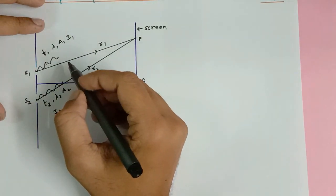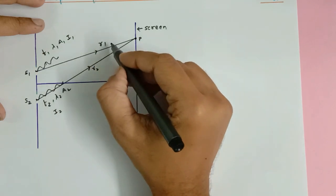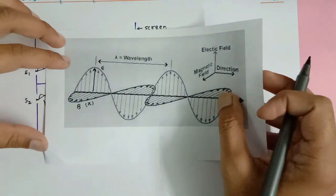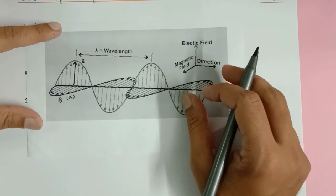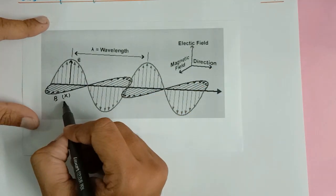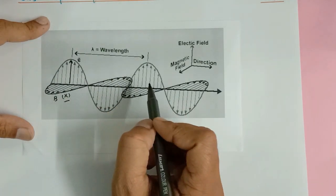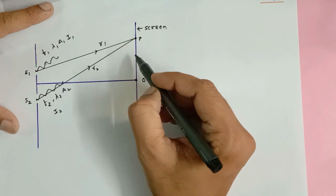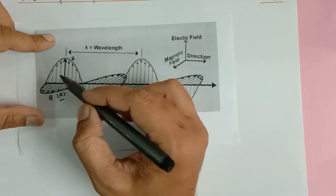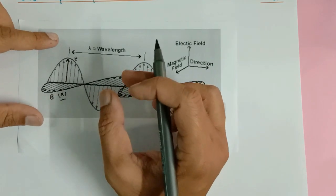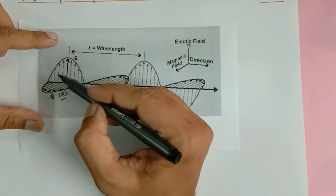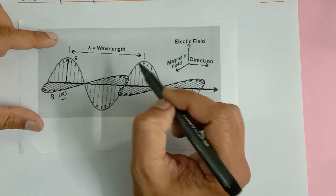Now we might like to understand what is light and what causes the interference pattern. Light is basically an electromagnetic wave — there is an electric field part and a magnetic field part. We are not going to talk about the magnetic field, because the fringes you see on the screen are an outcome of superposition of electric field waves only. When the magnetic field waves superpose we don't see or visualize anything. So the visual perception on the screen is purely due to the superposition of electric field vectors.